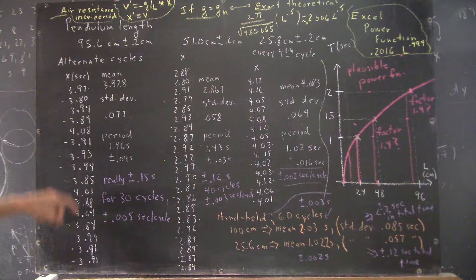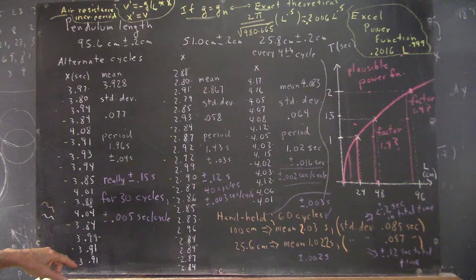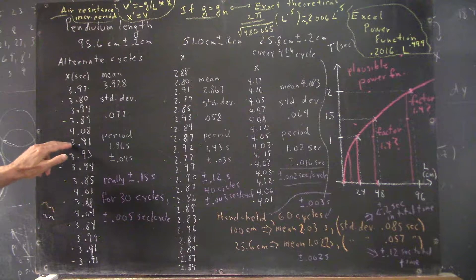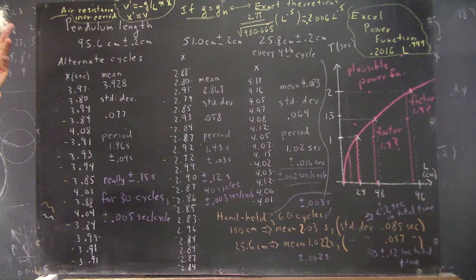So that the sum of all these, and how many of them are there? 1, 2, 3, 4, 5, 6, 7, 8, 9, 10, 11, 12, 13, 14, 15, 16.